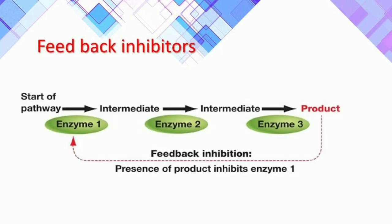The third type is feedback inhibition — a cellular control mechanism in which an enzyme's activity is inhibited by the enzyme's own end product. When an enzyme undergoes many reactions and a product is formed, that product inhibits the first part of the reaction. So there are three kinds of inhibitors: competitive, non-competitive, and feedback inhibitors. These are the factors affecting the rate of enzyme activity.